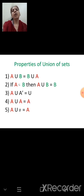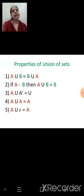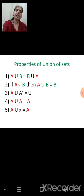Properties of union of sets: A ∪ B equals B ∪ A. If A is a subset of B, then A ∪ B equals B, the bigger set. A ∪ A complement equals the universal set U. A ∪ A equals A. And A ∪ empty set equals A.